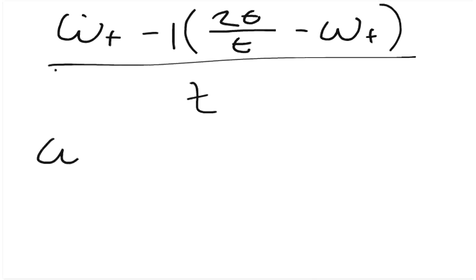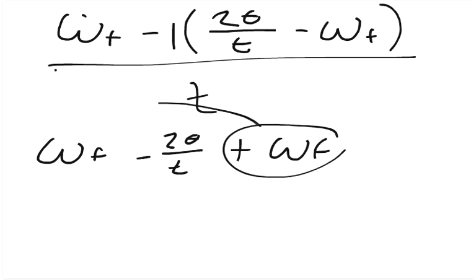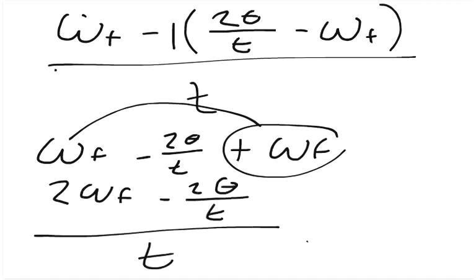And what we get is the final angular speed minus 2 angular displacement over time plus final velocity. So the negative canceled out there and turned into a plus. And then we can combine these, so we get 2 times the final angular speed minus 2 times the angular displacement over t. All of that over t equals angular acceleration.